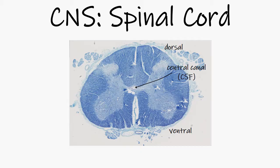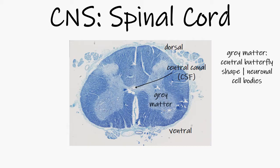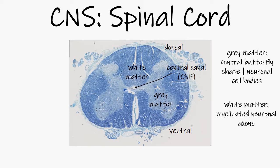Here is a cross-section through a lumbar spinal cord. It is blue because it is stained with Luxol Fast Blue, which you can Google if you are interested in learning more about this special stain. Isn't it beautiful? It is divided into grey matter, which is composed of neuronal cell bodies and forms a central butterfly shape, and white matter, which is composed of myelinated nerve axons.